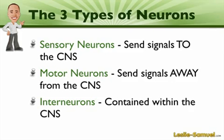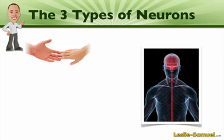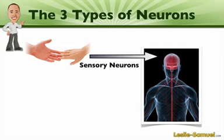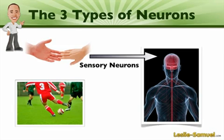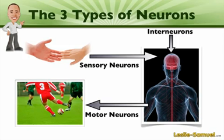Interneurons are where a lot of the processing happens. To illustrate this: if you're being touched or, as in the first example, you touch a hot stove, signals are sent to the central nervous system via sensory neurons. If you're out on the field playing football and getting ready to kick a ball, the central nervous system sends signals to the muscles in your legs via motor neurons, telling those muscles to contract in a certain way so you can kick the ball. Interneurons in the brain and spinal cord do the processing and also serve as a connection between sensory input and motor output.